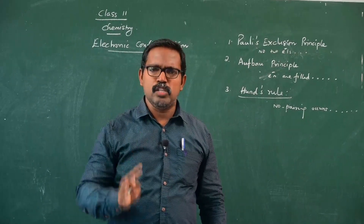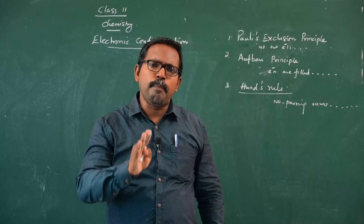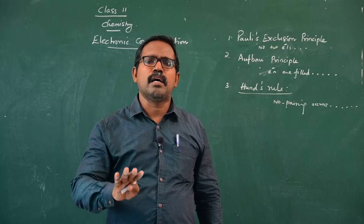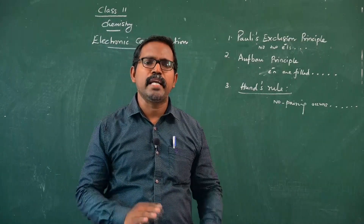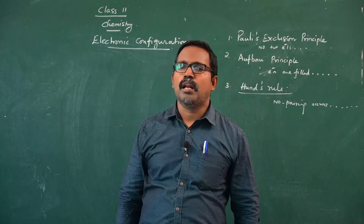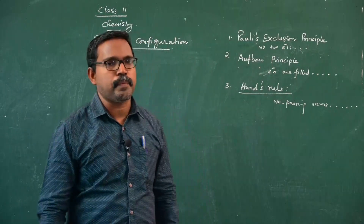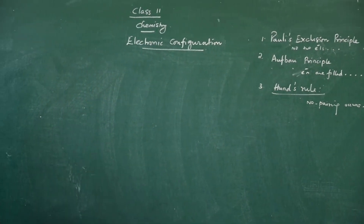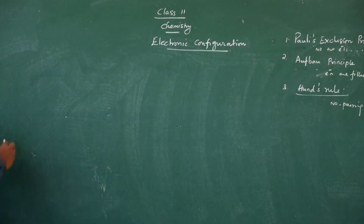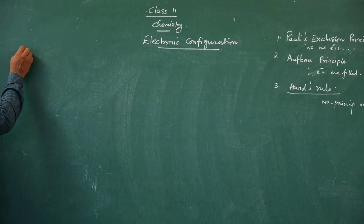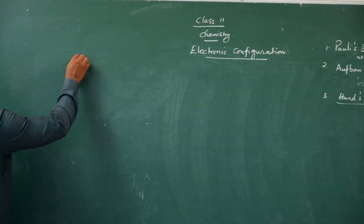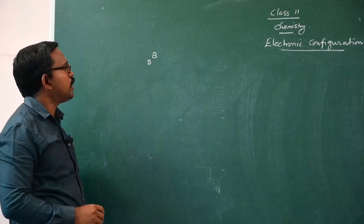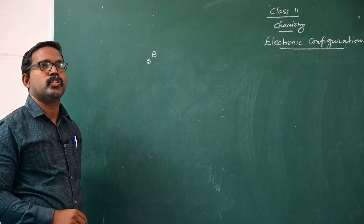Hund's rule: no pairing occurs until all the orbitals are singly occupied. Now I will explain the last two rules by simple illustrations. Let us consider the atom boron, atomic number 5, and write its electronic configuration.